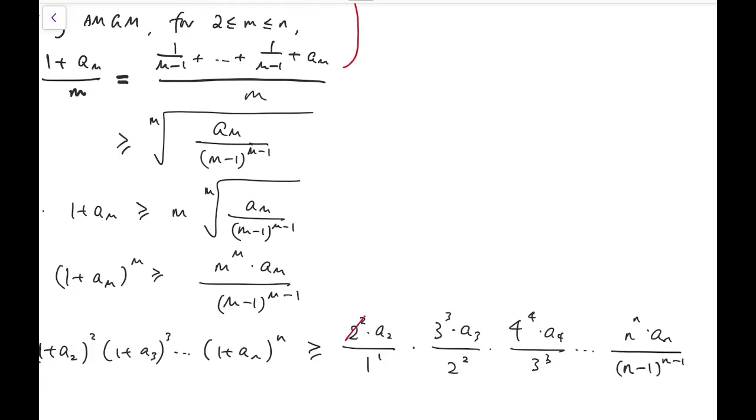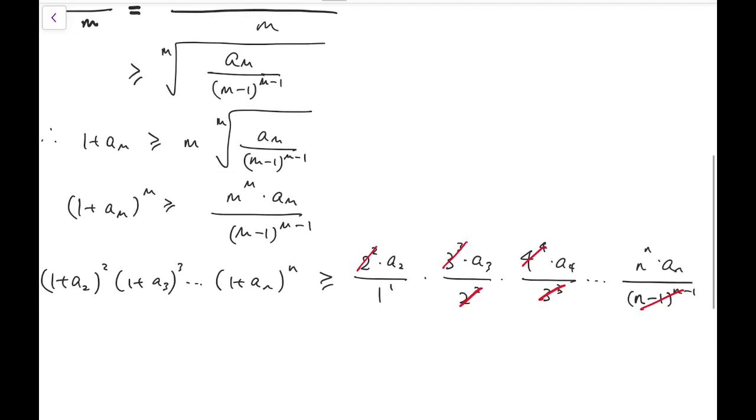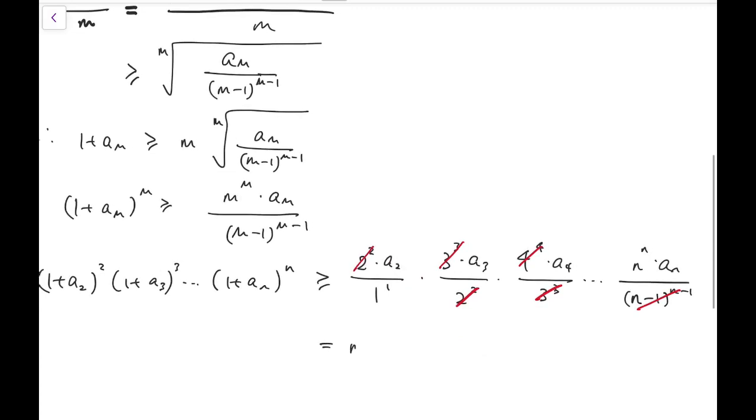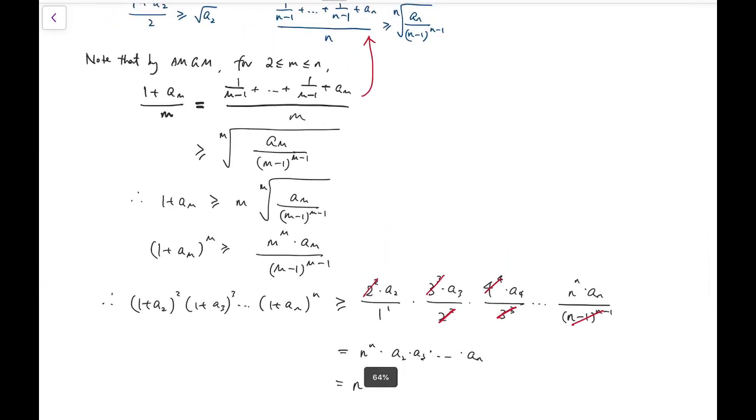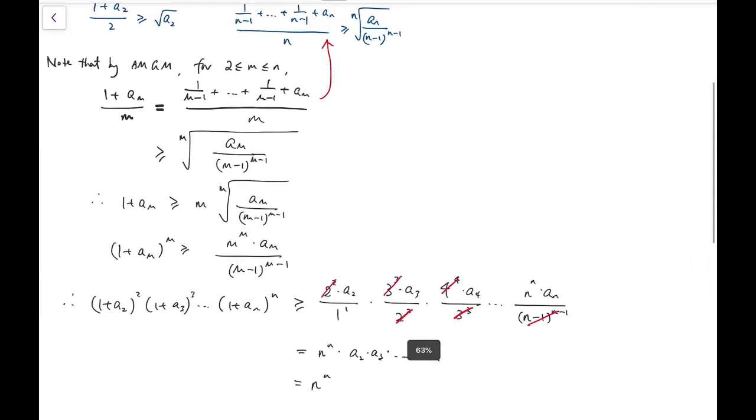And the miraculous thing is, these numbers 2², 3³, 4⁴, all the way to (n-1)^(n-1) will all vanish because they cancel out. And what's left is just n^n times a₂ · a₃ all the way to aₙ, and that's exactly n^n. So we have already achieved the inequality.